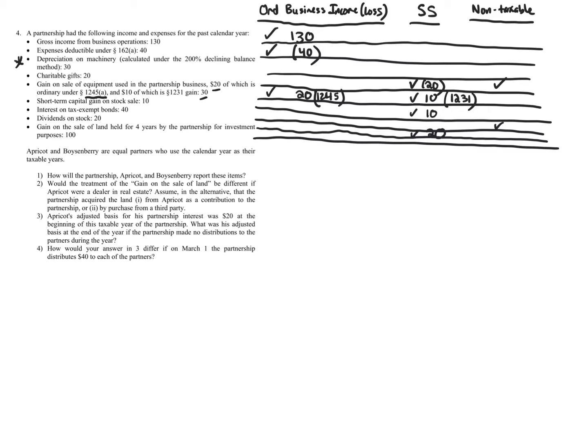Finally, the gain on the sale of land — which is a long-term capital gain — is separately stated. All capital gains are separately stated, so we have $100 of separately stated long-term capital gain.